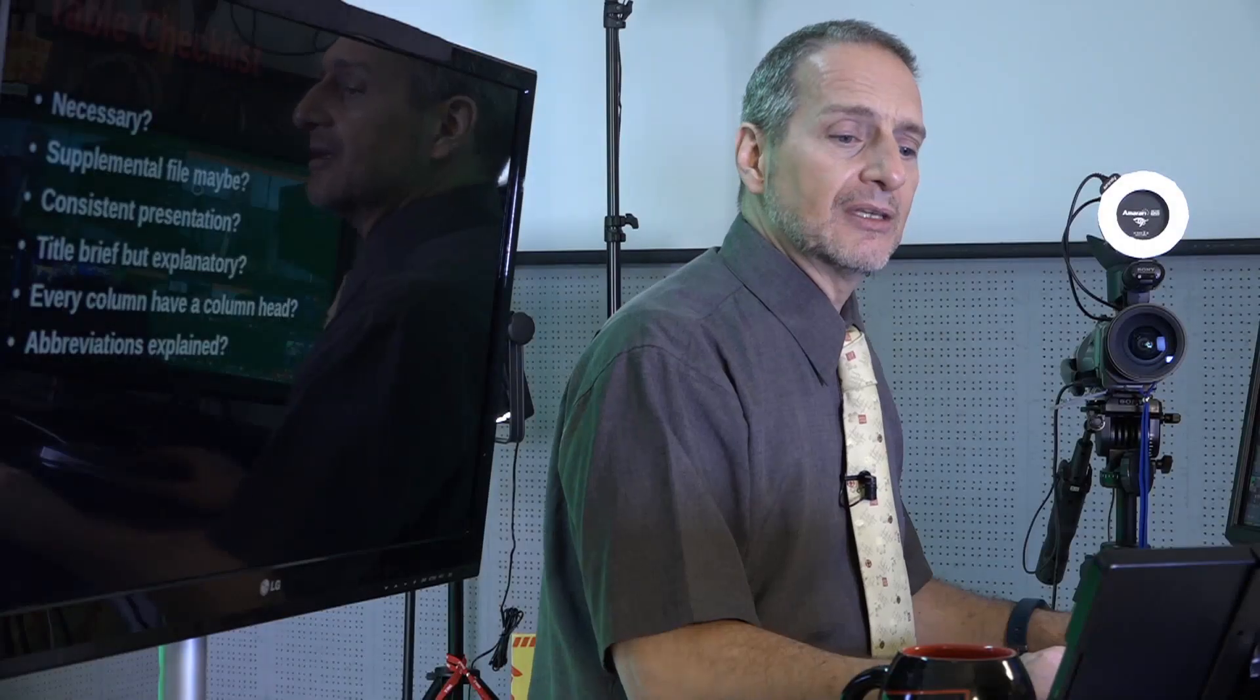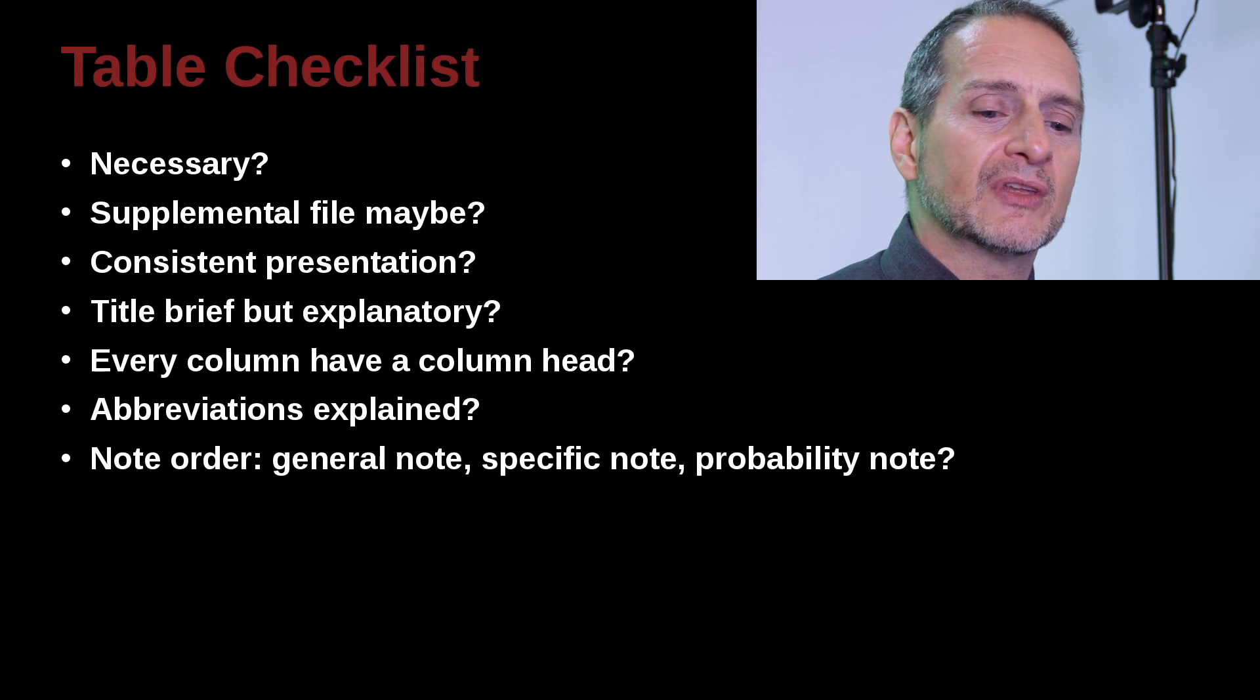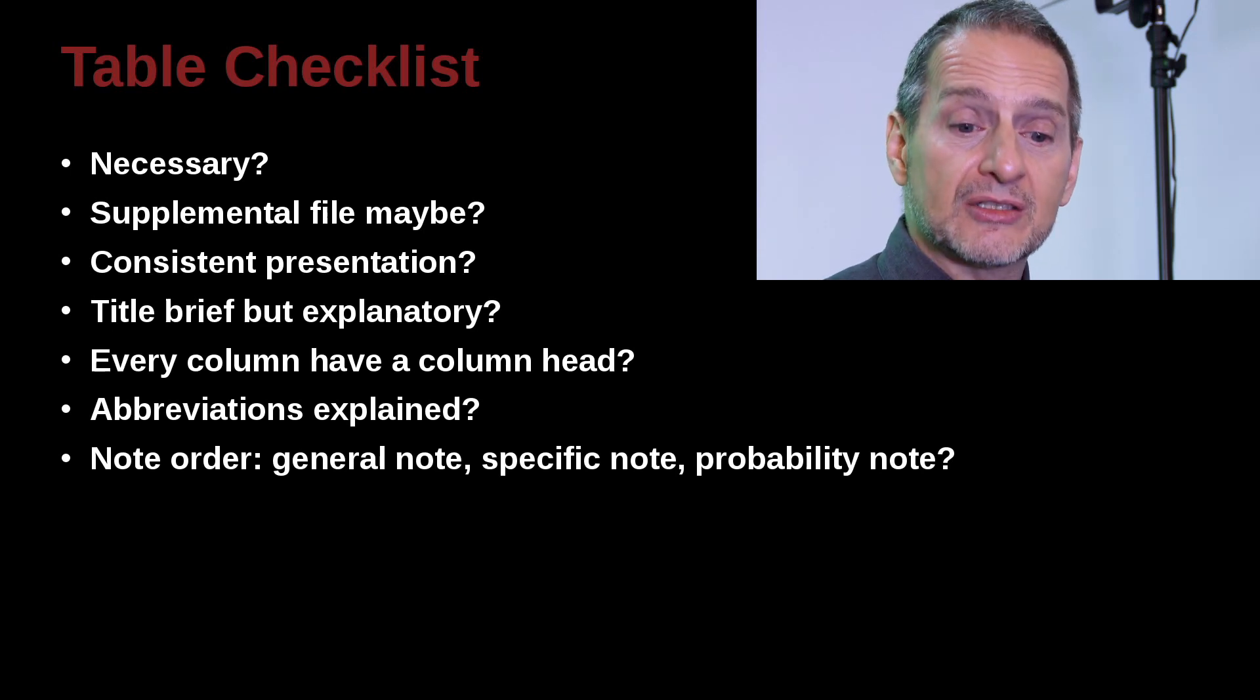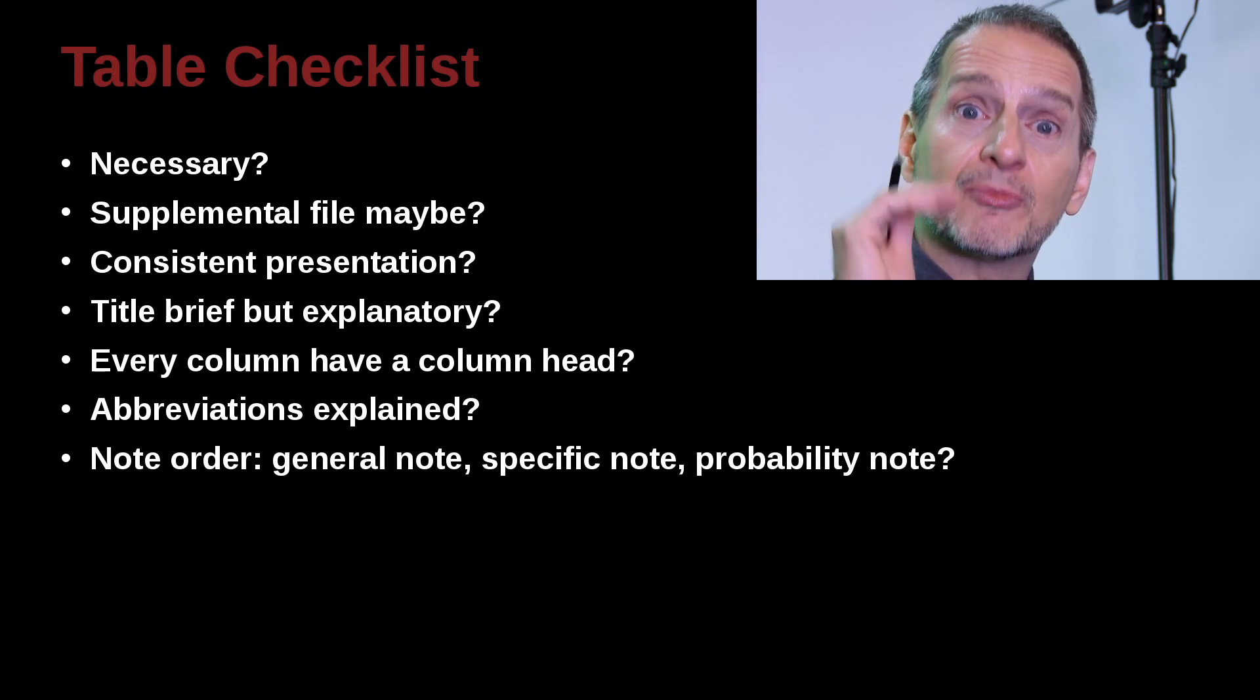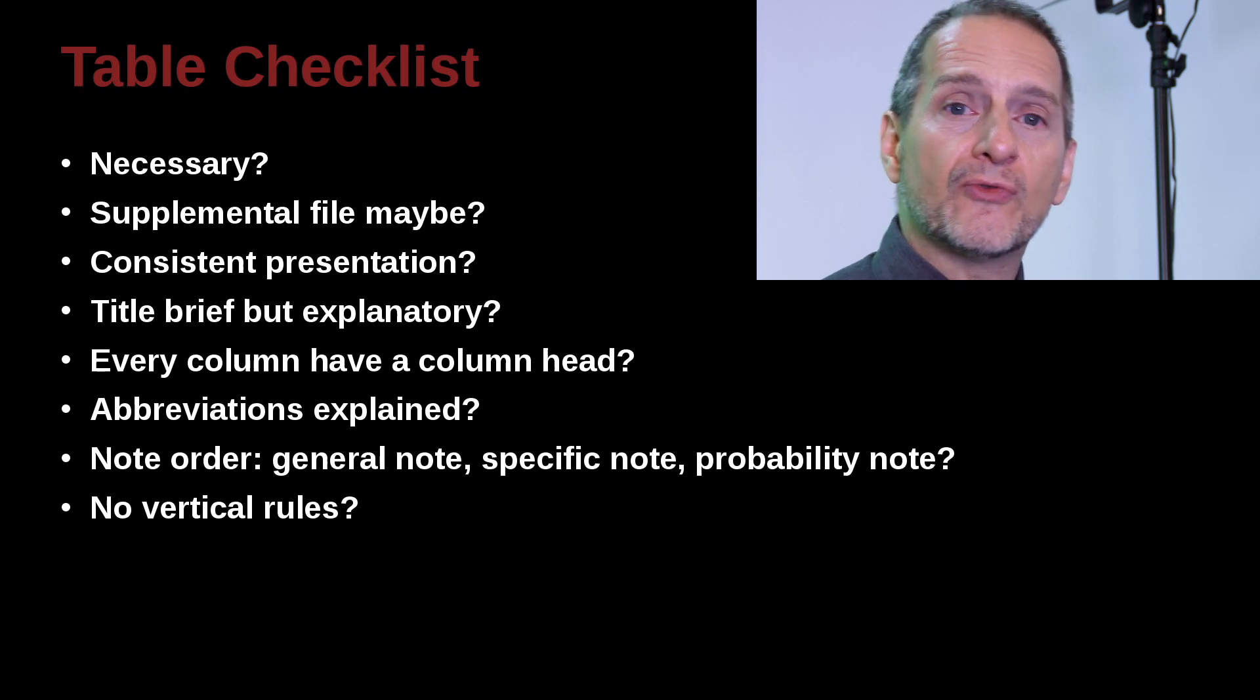Consistent presentation. Do all your tables have the same kind of look and feel? Do they have the same kind of design? Are they consistent? Do they use the same kind of capitalization? Do they use the same kind of decimal point placement? The same kind of statistical power? Are they all consistent? Is the title of your table brief and clear? Does every column have a column heading? Are the abbreviations explained? That is, anything that's abbreviated, do you explain it well? Do your notes have an order? That is, do they come general, specific, probability? That's the order they should be in. Did you follow that order?